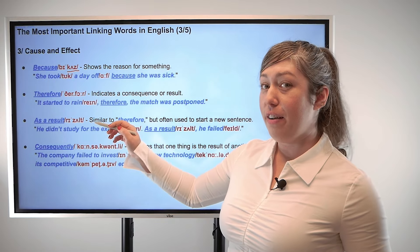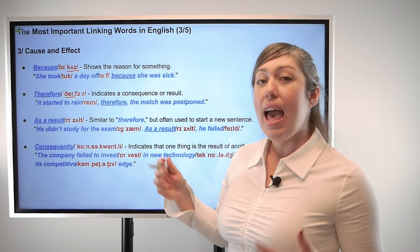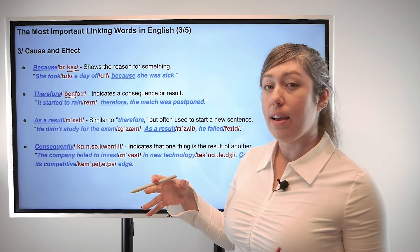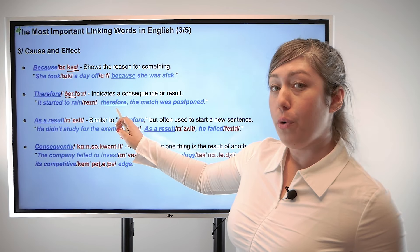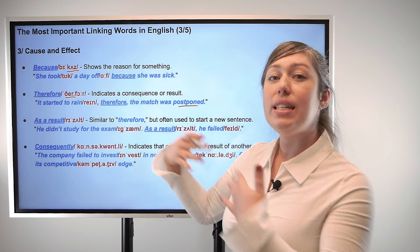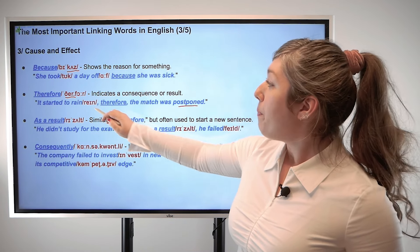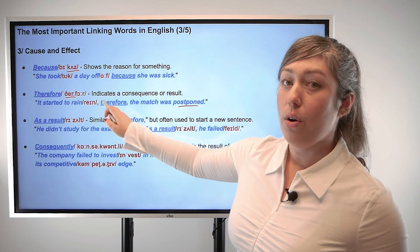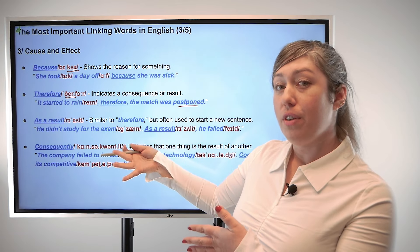Next we have 'therefore,' with the emphasis on the first syllable, therefore. This indicates that there is a consequence or a result for something. For example, it started to rain, therefore the match was postponed — meaning it was scheduled for a later time. The consequence or result of the rain is that the match was postponed.